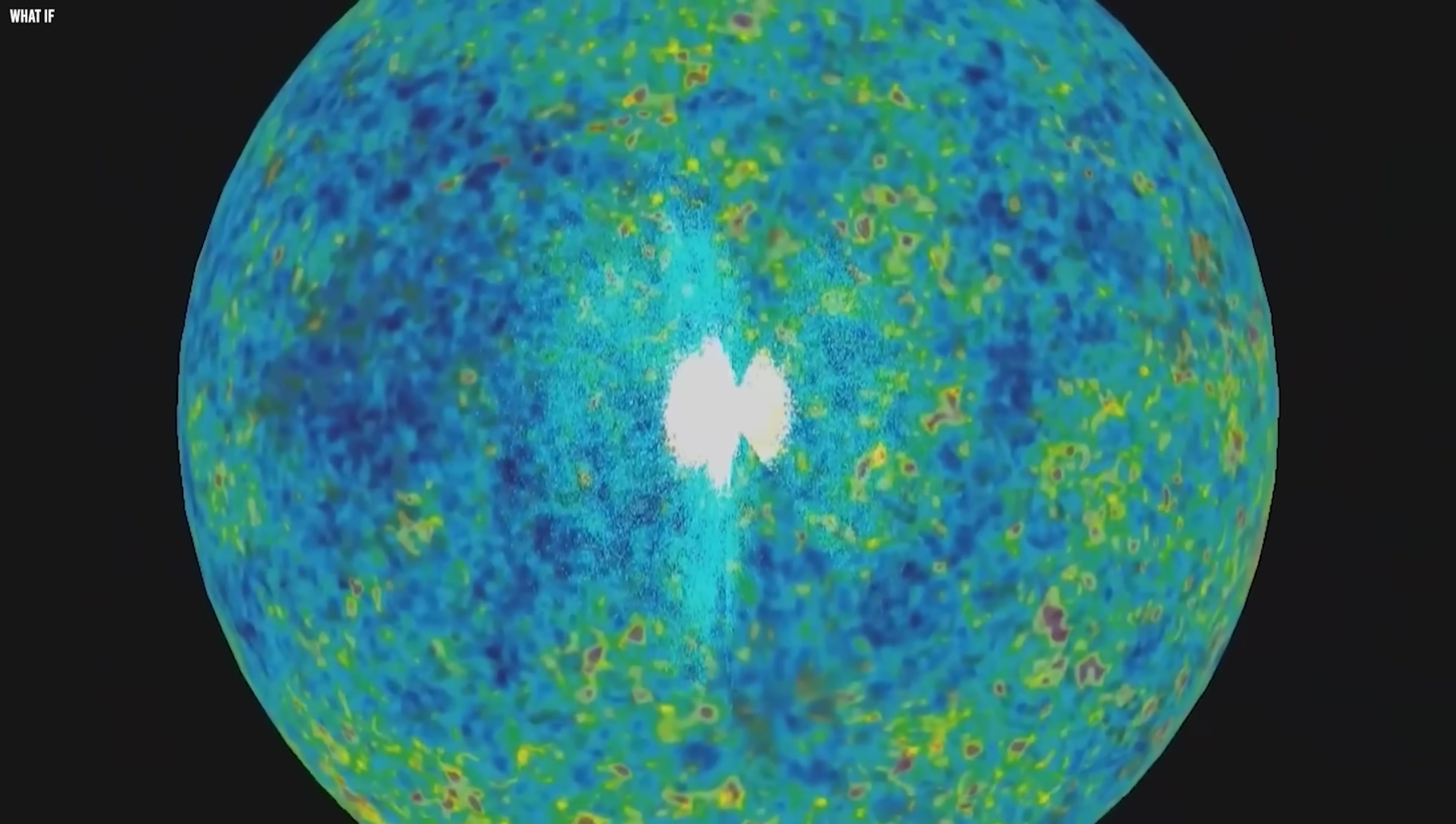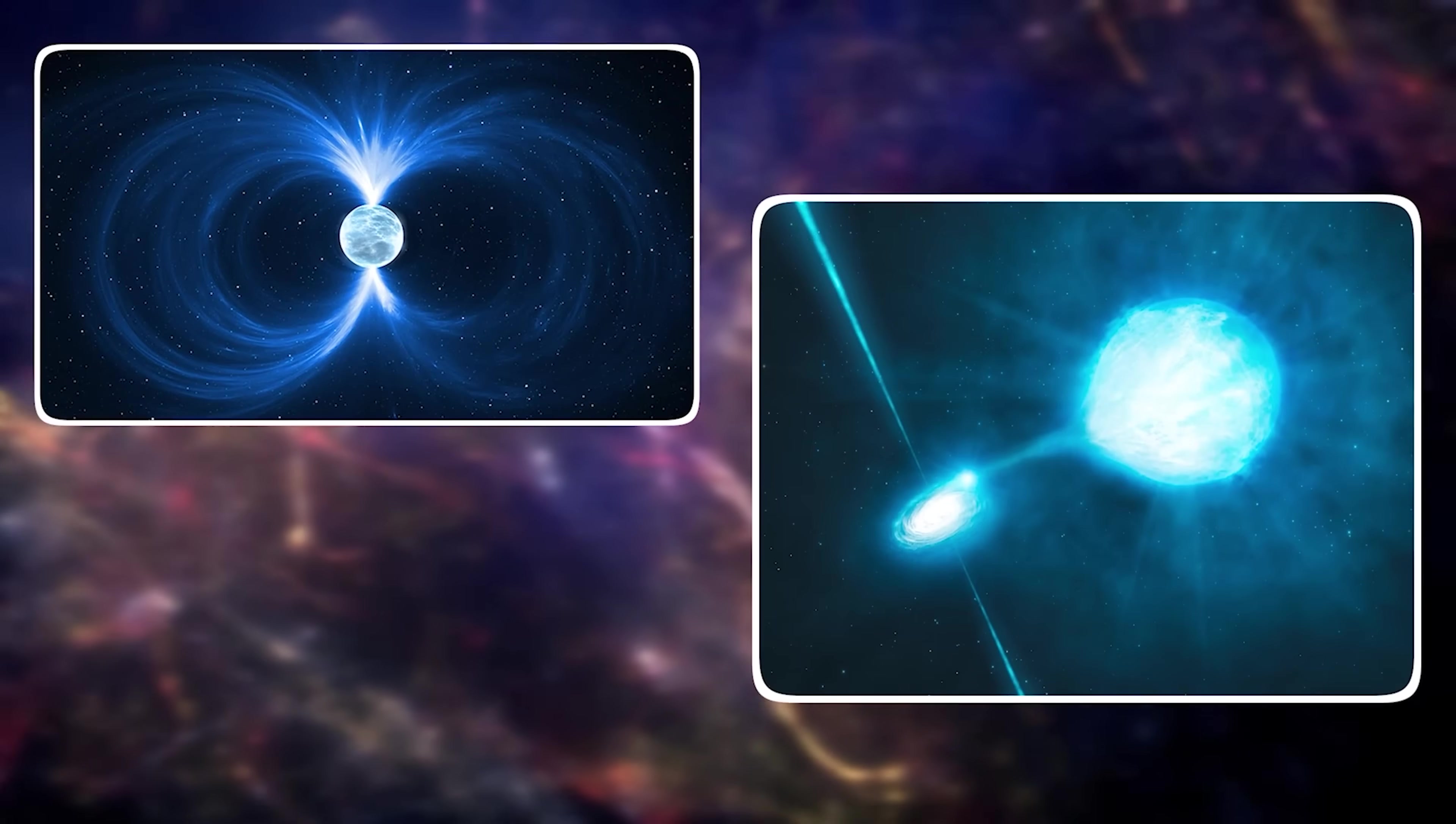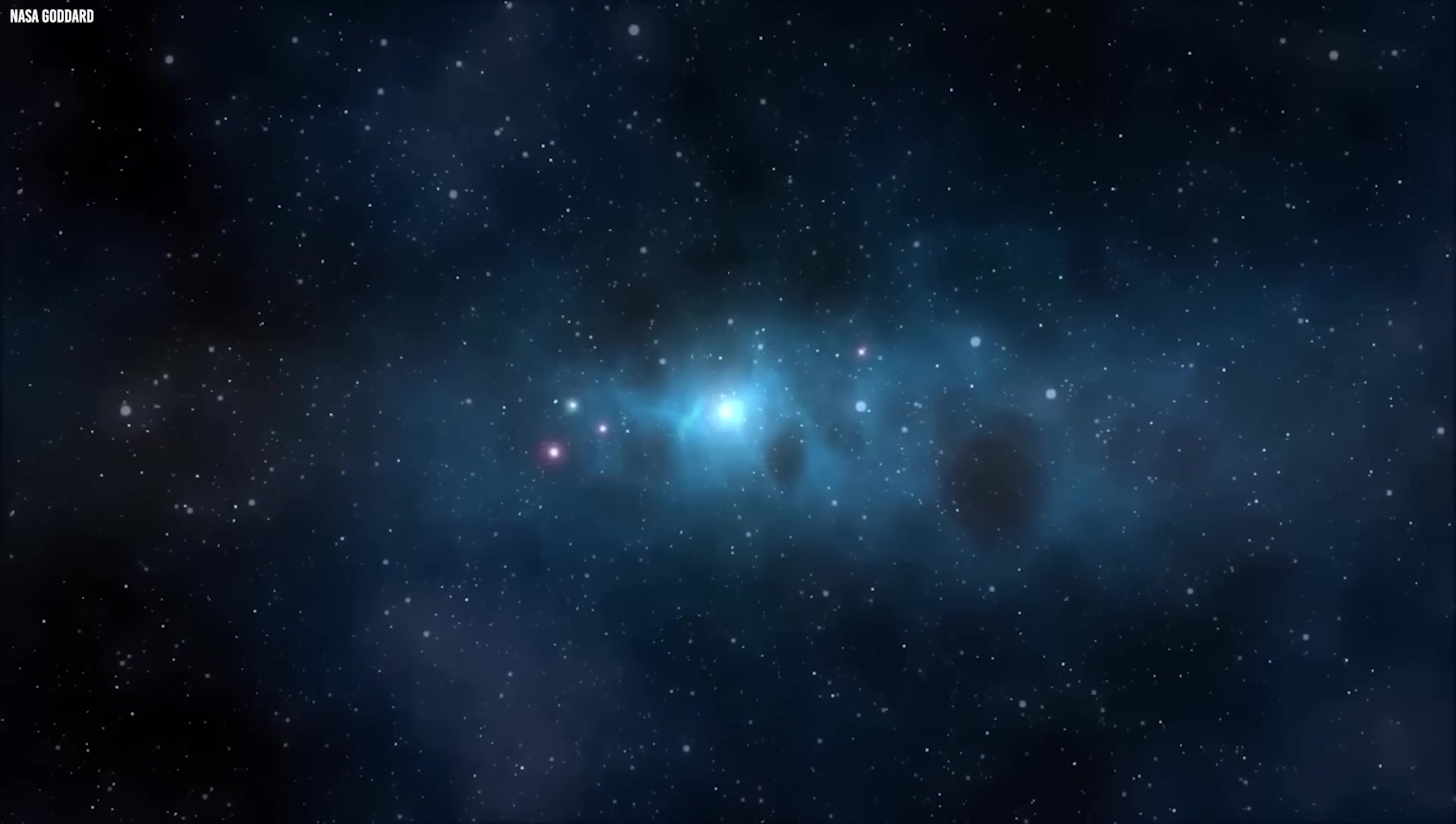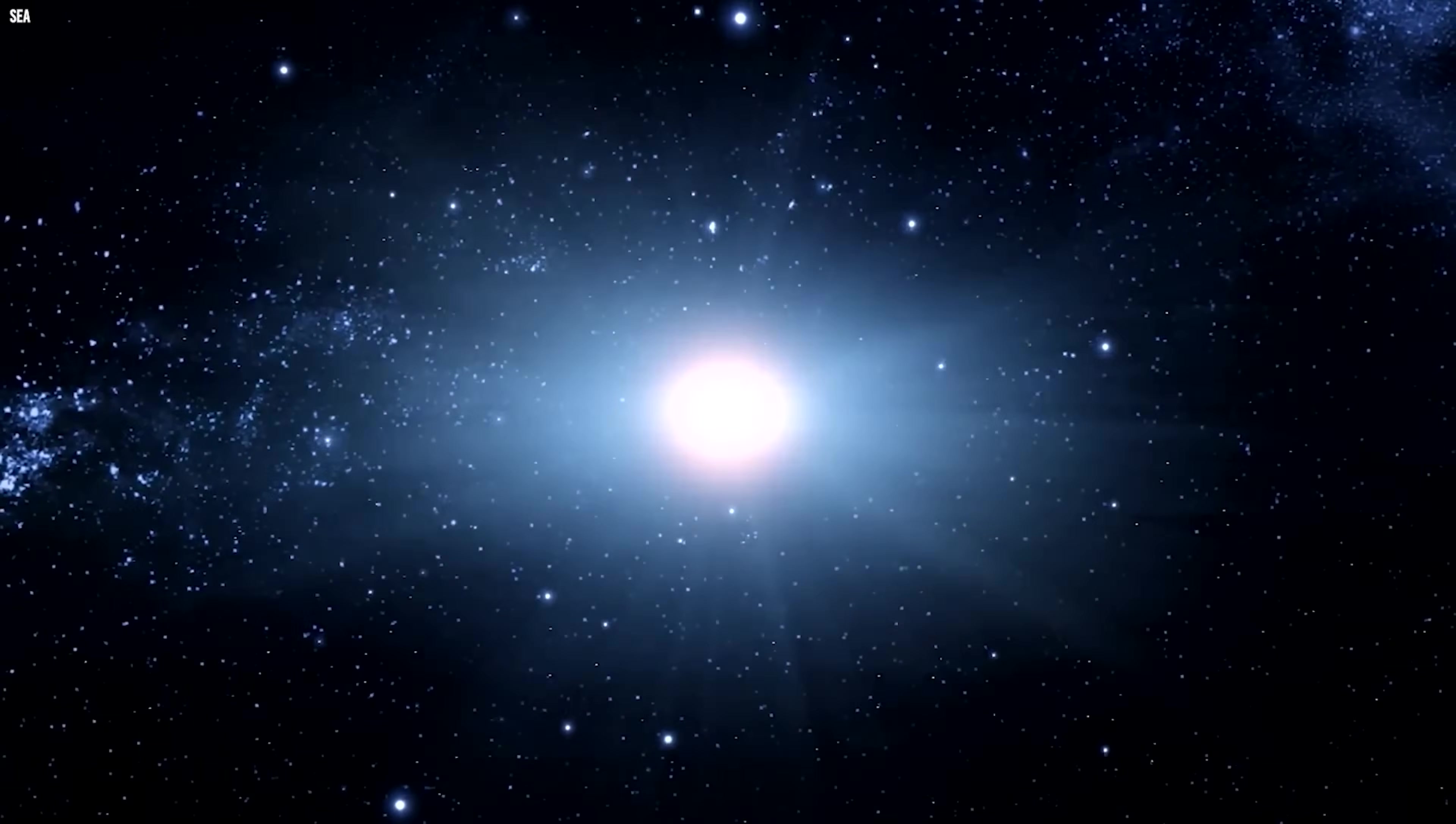When the researchers projected these rates forward across cosmic durations, a surprising picture emerged. Neutron stars and stellar-mass black holes end up evaporating on comparable timescales. White dwarfs survive longer, but they too eventually disappear. The longest possible lifespan for any compact stellar remnant comes out to around 10 to the 78th years. That number is staggering, yet it is vastly shorter than earlier predictions that place the universe's final fade-out at timescales almost beyond comprehension.